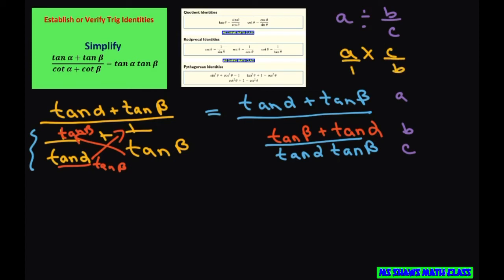You want to put A in fraction form. So I'm going to write tan alpha plus tan beta over 1. I keep, and I'm going to say times and then flip these two. So it's going to be tan alpha tan beta divided by tan alpha plus tan beta.